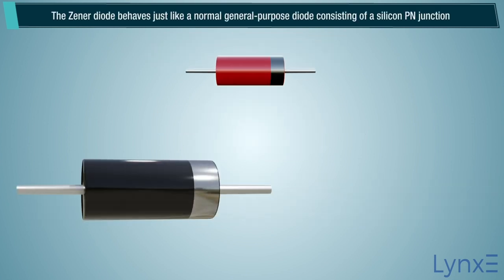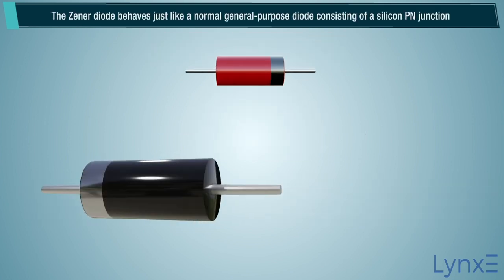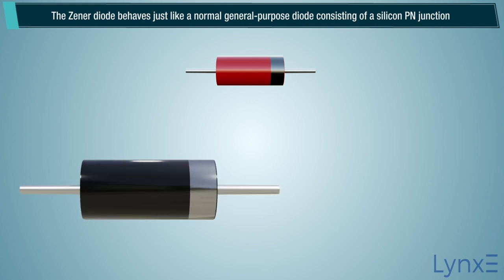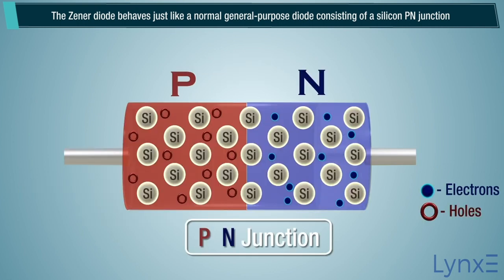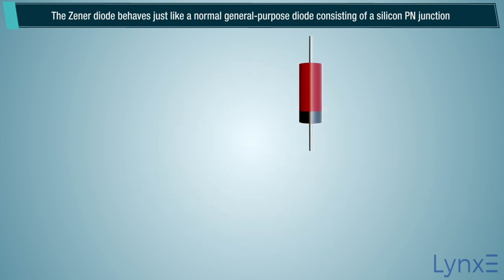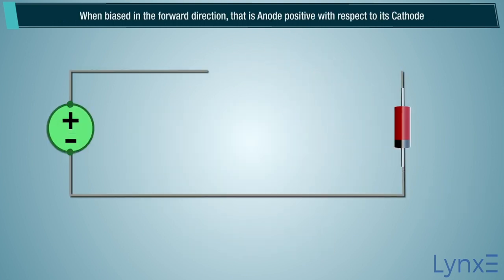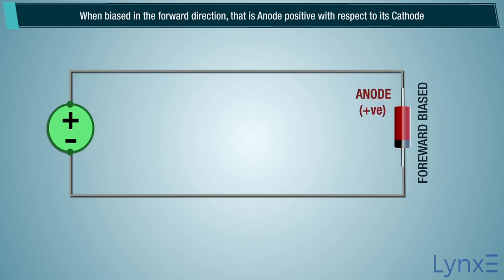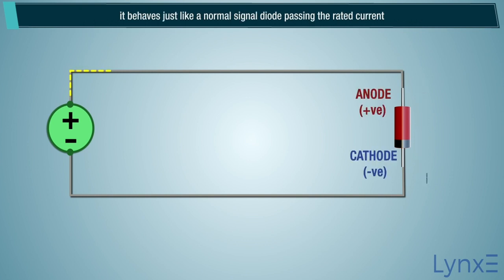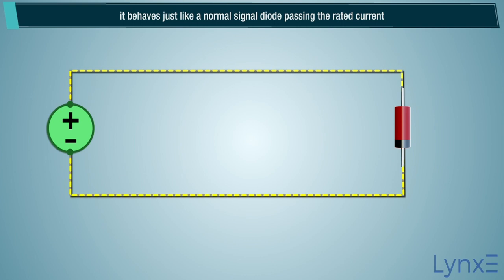The Zener diode behaves just like a normal general purpose diode, consisting of a silicon p-n junction. When biased in the forward direction, i.e. anode positive with respect to its cathode, it behaves just like a normal signal diode passing the rated current.